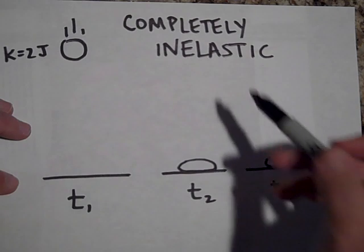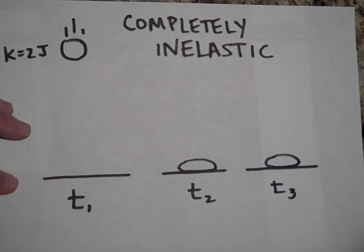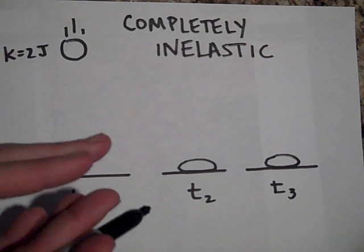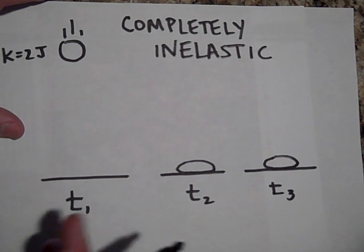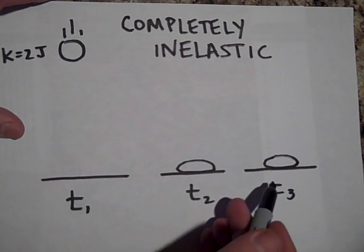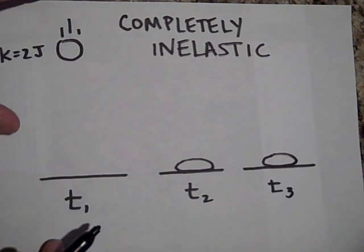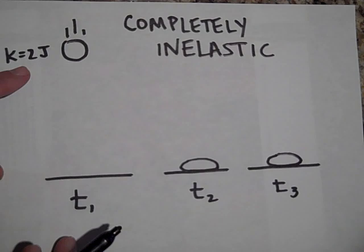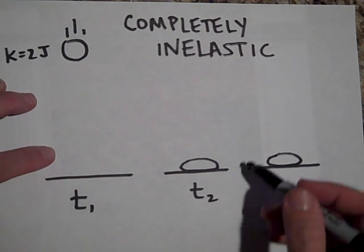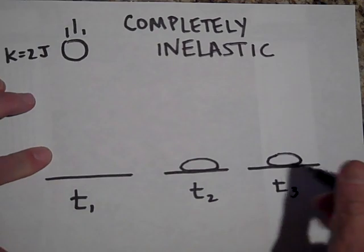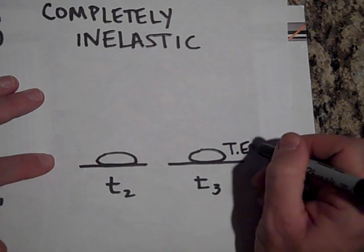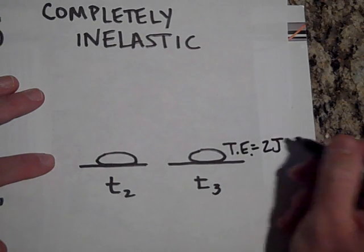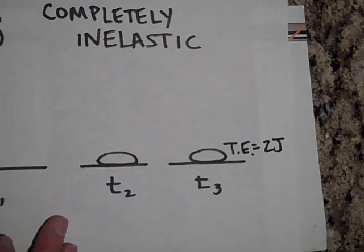In a completely inelastic collision, consider clay: once it gets squished, it doesn't return to its normal form — it's not bouncy. At t3, it's still sitting on the ground. It had two joules of kinetic energy, but that energy has become thermal energy. The thermal energy of the system has increased by two joules.